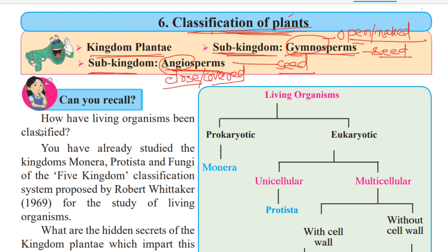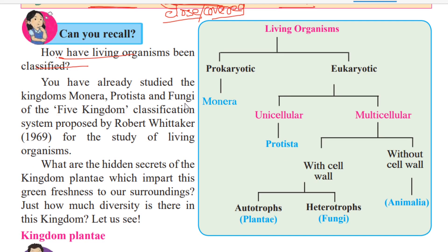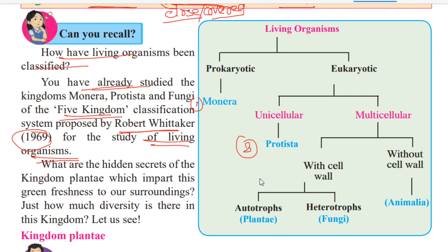How have living organisms been classified? You have already studied the kingdoms in earlier standards. Robert Whittaker, a great scientist, in 1969 classified all living organisms into five kingdoms: Monera, Protista, Plantae, Fungi, and Animalia.